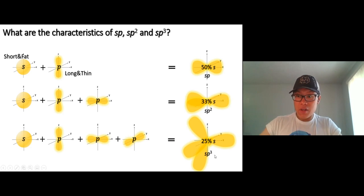When you compare the length of SP3 orbital to the rest, SP and SP2, the SP3 is going to be the longest and the thinnest. SP orbital compared to SP2 and SP3 is going to be the shortest and the biggest, the fattest. Does it make sense?